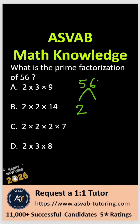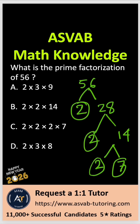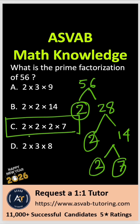Starting with 2: 56 divided by 2 gives you 28. Do it again — 28 divided by 2 gives you 14. Do it again — 14 divided by 2 gives you 7. So if you multiply 7 times 2 times 2 times 2, that gives you 56. The correct answer is option C: the prime factorization of 56 is 2 × 2 × 2 × 7.